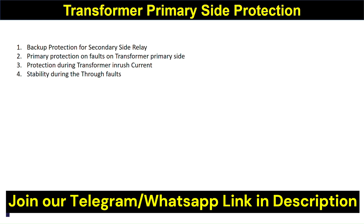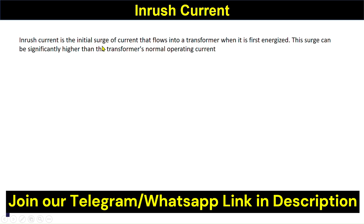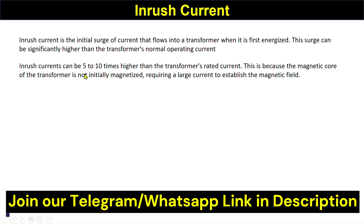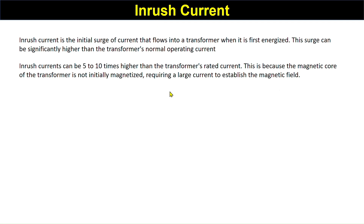We should know a little bit about inrush currents. The inrush current is the initial surge of current that flows into a transformer when it is first energized. This surge can be significantly higher than the transformer's normal operating current — inrush current can be five to ten times higher than the rated current, because the magnetic core is not initially magnetized and a large current is needed to establish the main magnetic field.